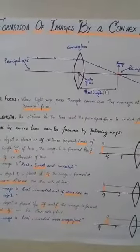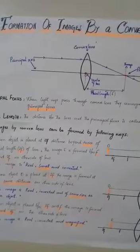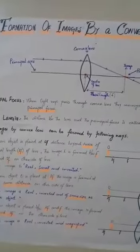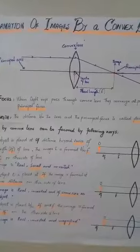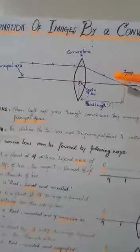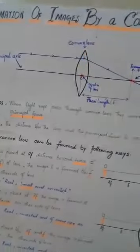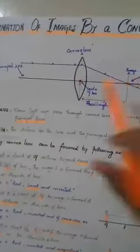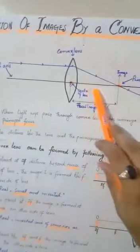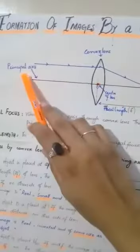Before starting the topic of how images are produced, let's discuss some important terms. Let's see the diagram. This is the convex lens. This is the center of the lens. The lens is placed on a main axis. This axis is considered the principal axis.